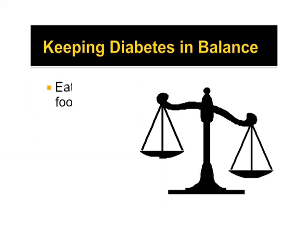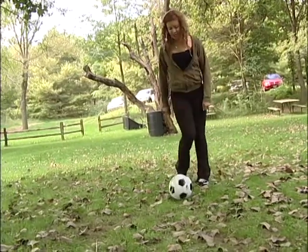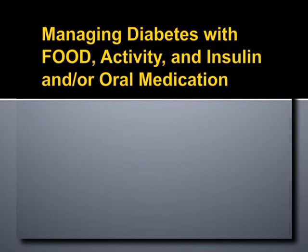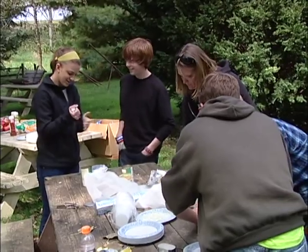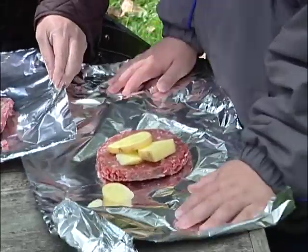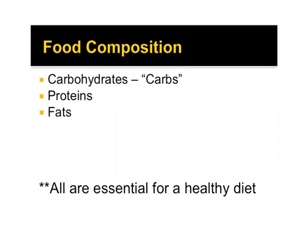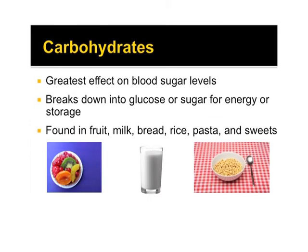Living with diabetes is a balancing act of food, activity, and insulin and/or oral medications. These three factors and how they affect blood sugar can change from day to day. Healthy eating is good for everyone, not just for people living with diabetes. Healthy eating includes balanced meals from a variety of all food groups, moderate serving sizes, and limited amounts of fats and sweets. Food is made up of three basic categories: carbohydrates, proteins, and fats. For people with diabetes, the carbohydrate category will affect blood sugar the most, so the person with diabetes will pay special attention to the amount of carbohydrates consumed at meals and snacks.